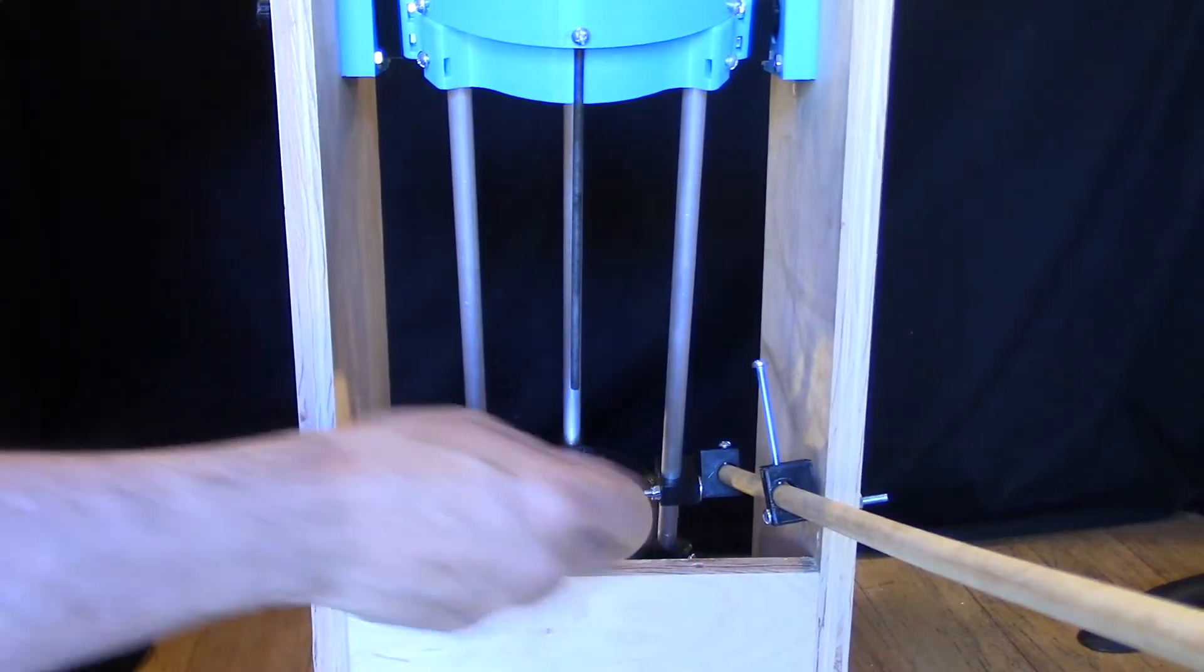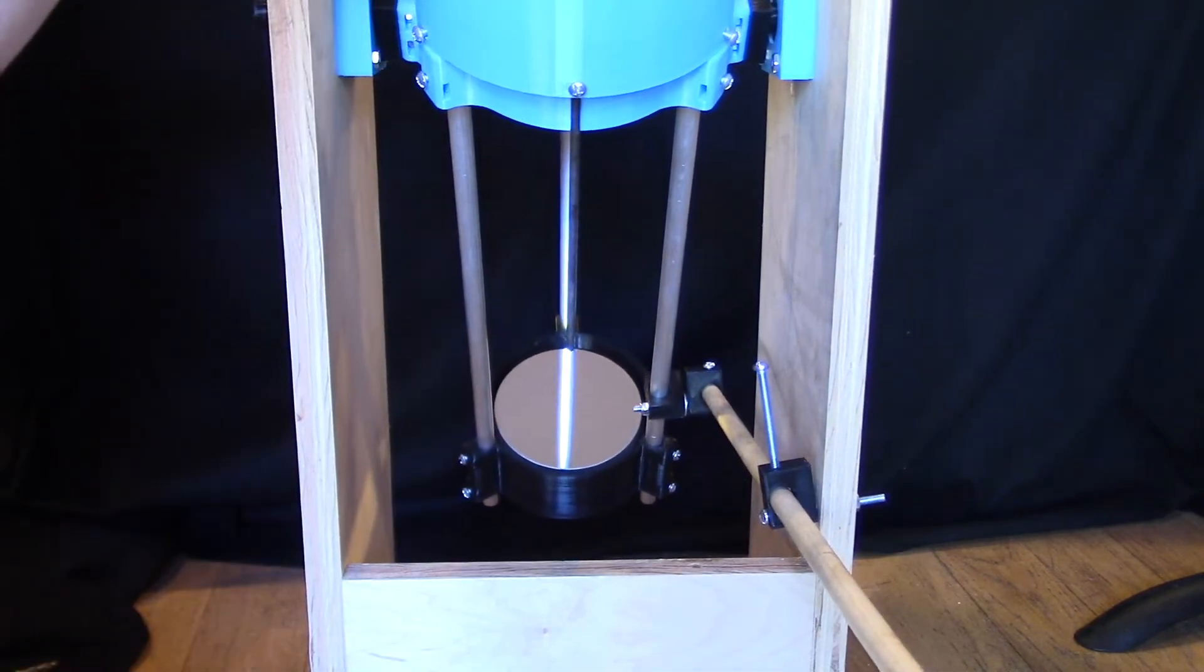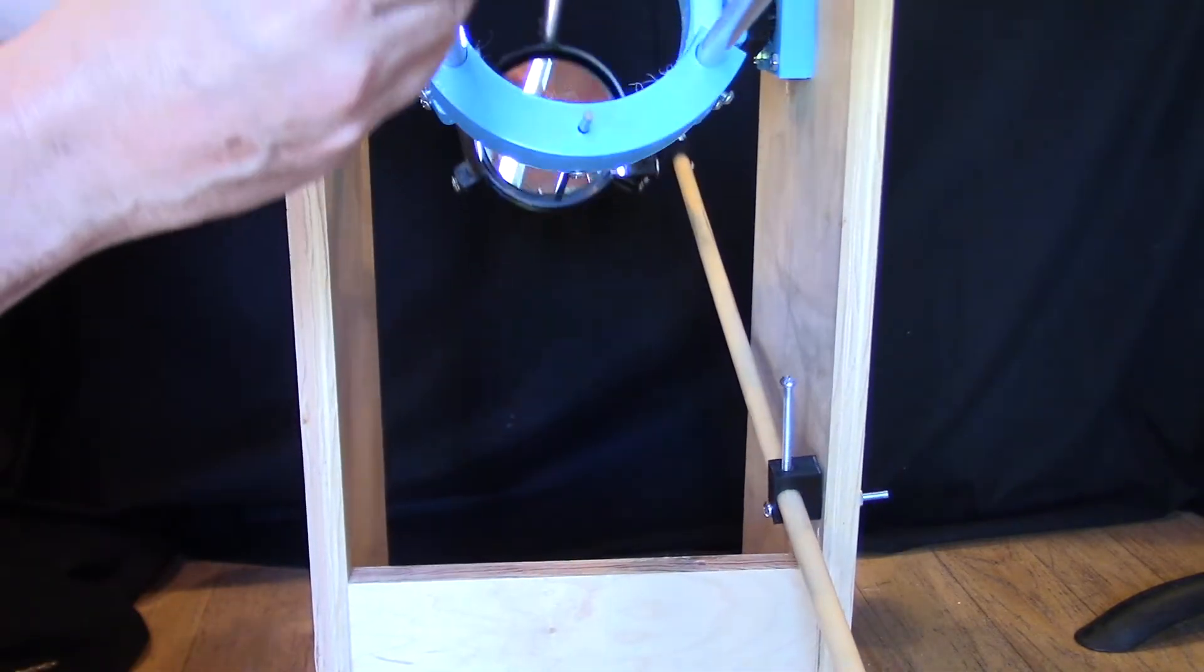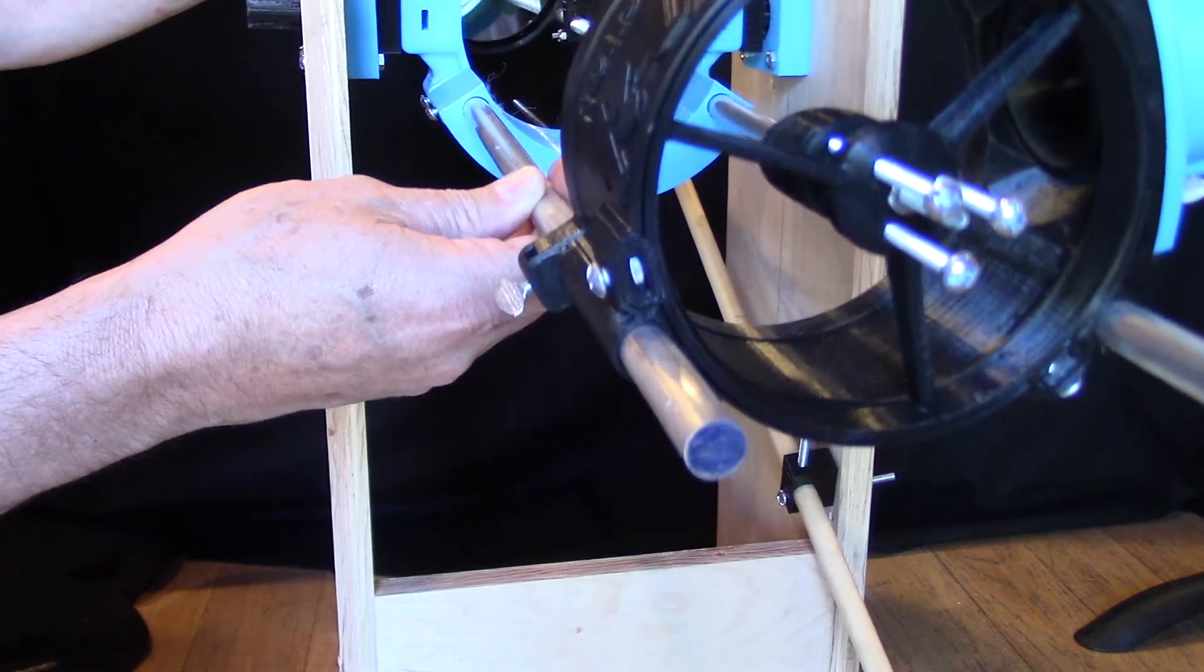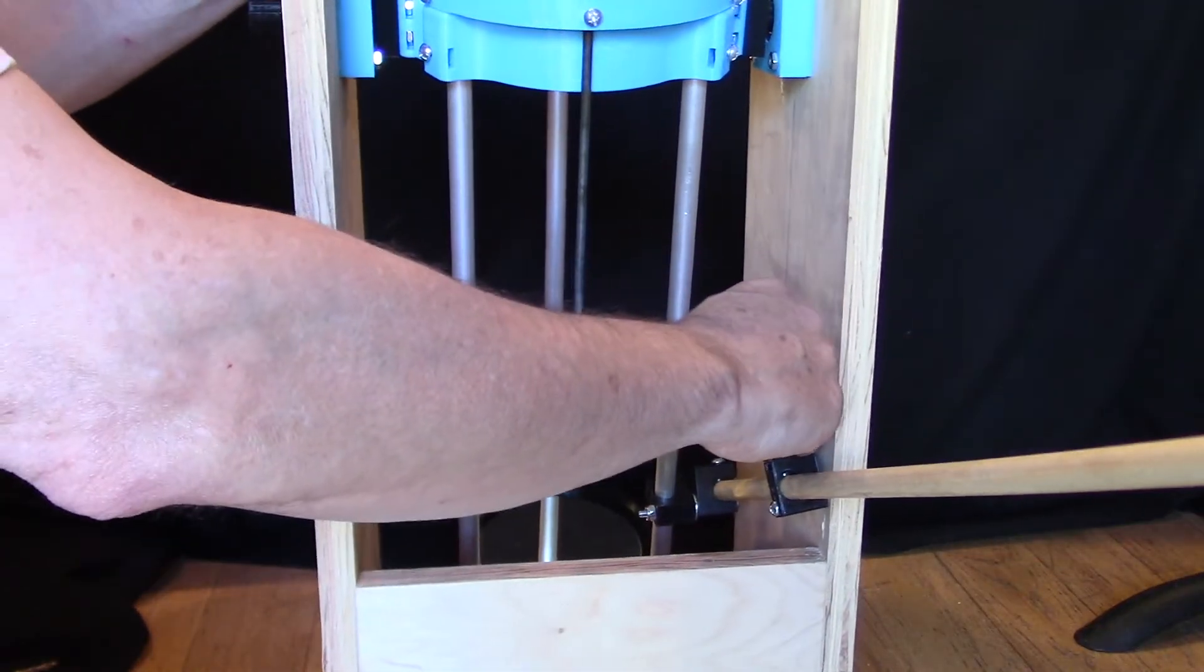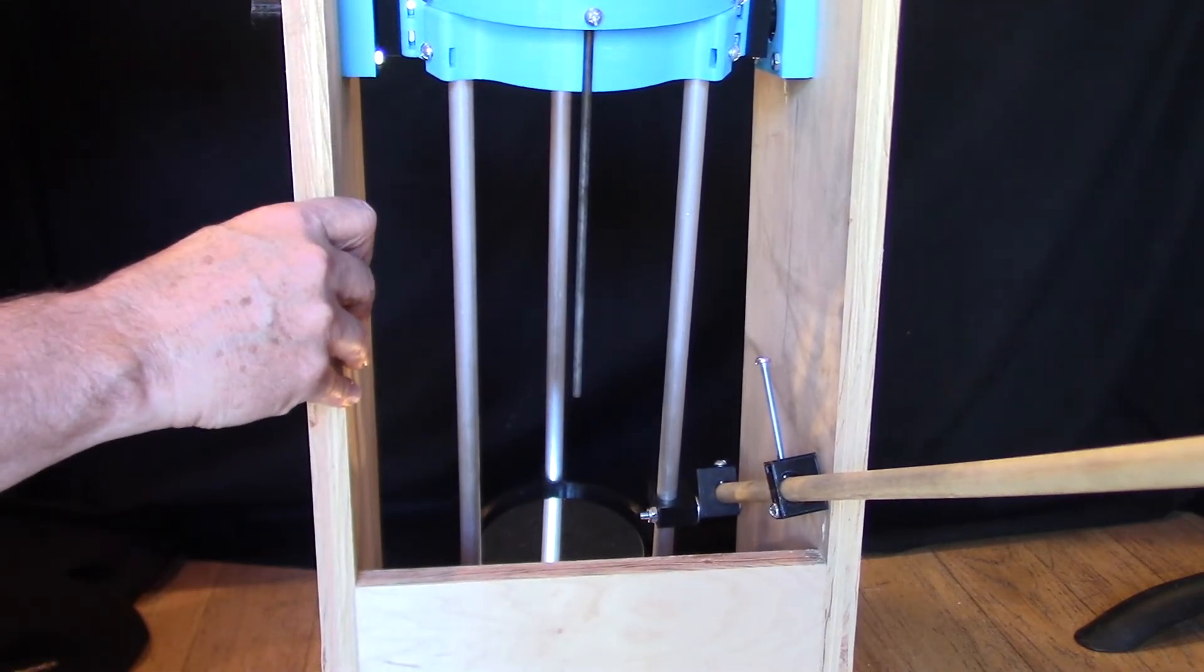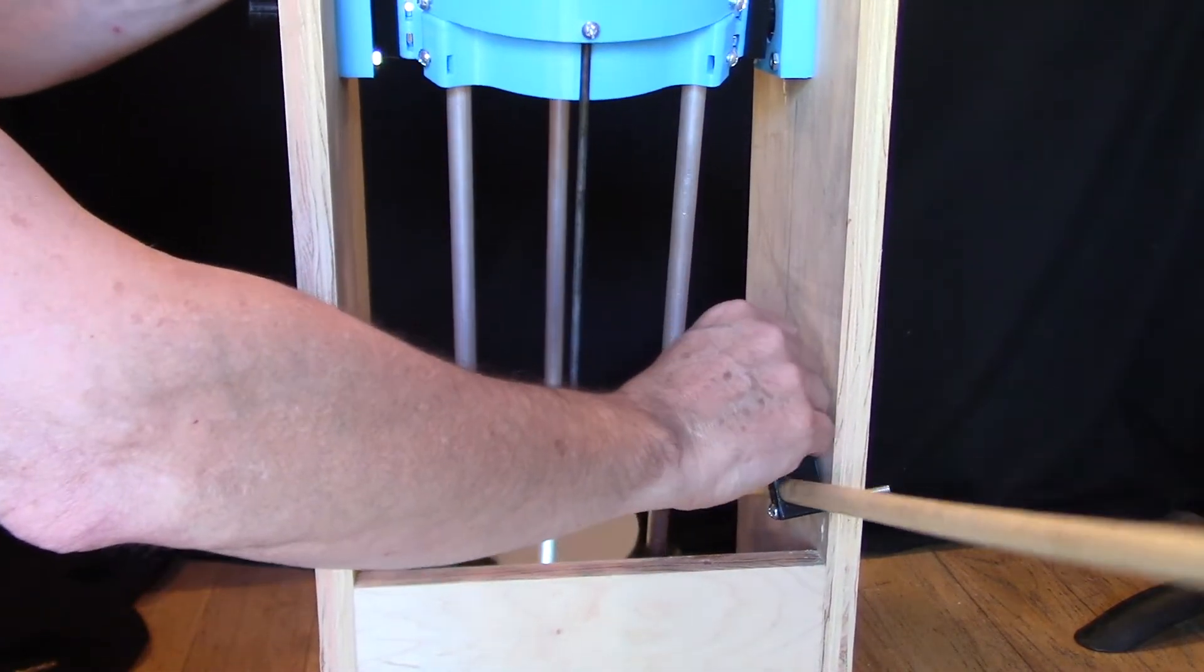All right, I have mounted it to the lower bracket here. And then let me show you how this works. So you can now go, you can take the scope all the way horizontal. Or you could take it all the way vertical. And then you just need to tighten this. And once you tighten that, that's fixed. And it can be set at any angle.